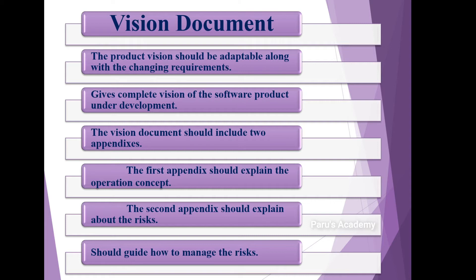What is a vision document? The product vision should be adaptable along with the changing requirements. It will explain the vision of the product — whatever changes are made by the software development team, the product vision should adopt those changes. It gives the complete vision of the software product under development, describing its purpose, qualities, and expected behavior.